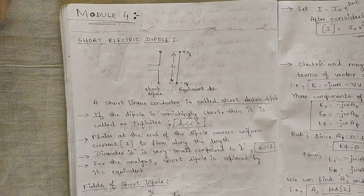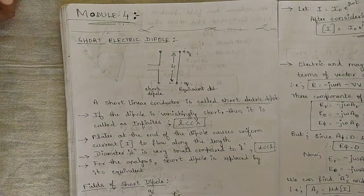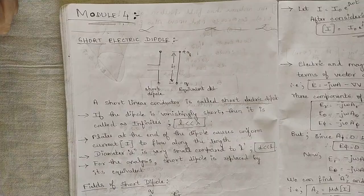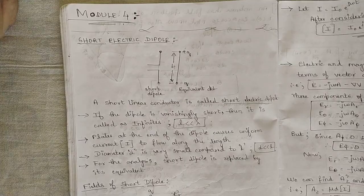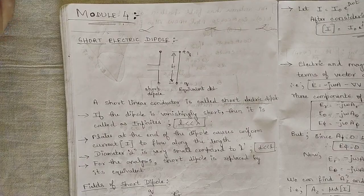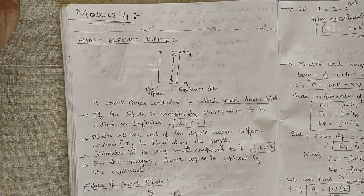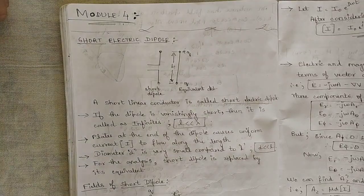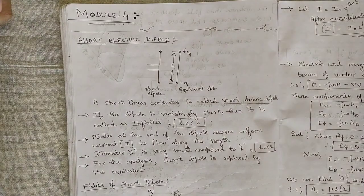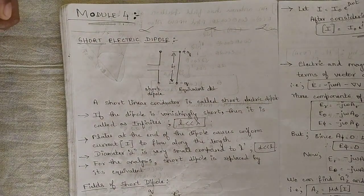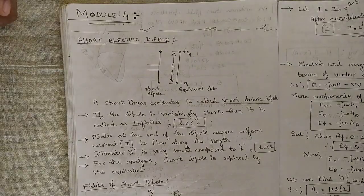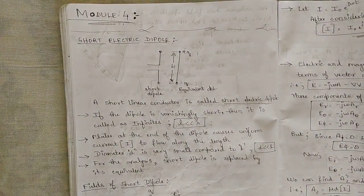Hello everyone, welcome to this new video. From today's video onwards we are going to start with Module 4 of Microwave Engineering and Antenna Theory. In the first three modules we discussed microwave systems, microwave networks, and in the previous module we studied basics of antenna and its parameters. In Module 4 we are going to continue with more advanced antenna concepts essential for radiation purposes.